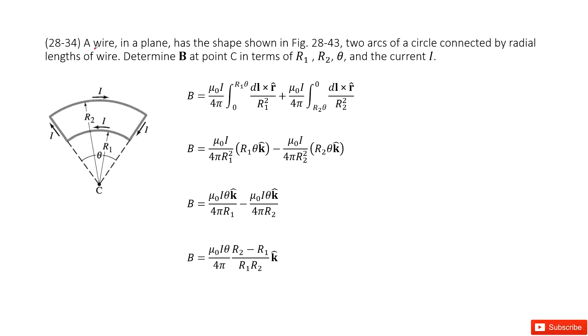Chapter 28 is about the sources of magnetic fields. Now we look at this shape. This wire is in two arcs and we need to determine the magnetic field B at the center C.